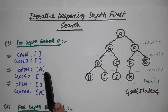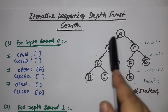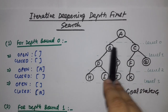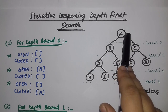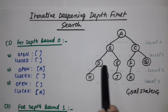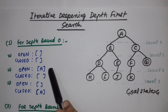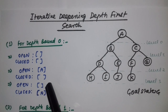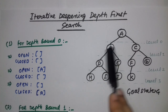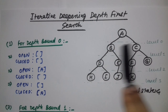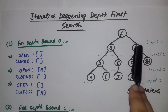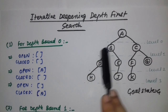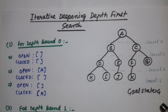As we move further downwards we see the children of A are B and C, but as it is depth bound 0 we don't have to traverse B and C. We simply move element A from the open list to the closed list, and the open list will remain empty. We don't have to write the level 1 elements in the open list as we are only traversing level 0.